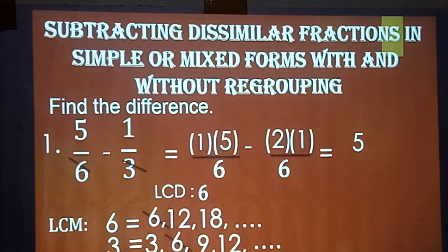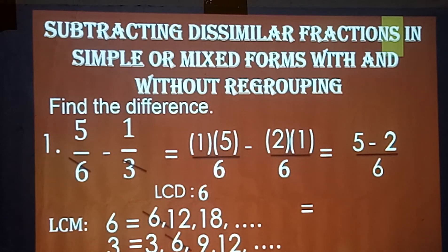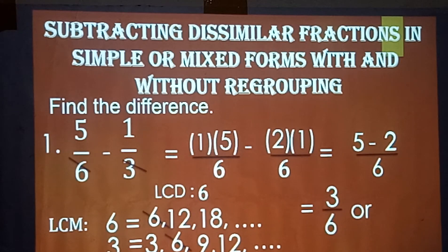2 times 1 is 2, 5 minus 2 over 6 is equal to 3 over 6 or one-half.